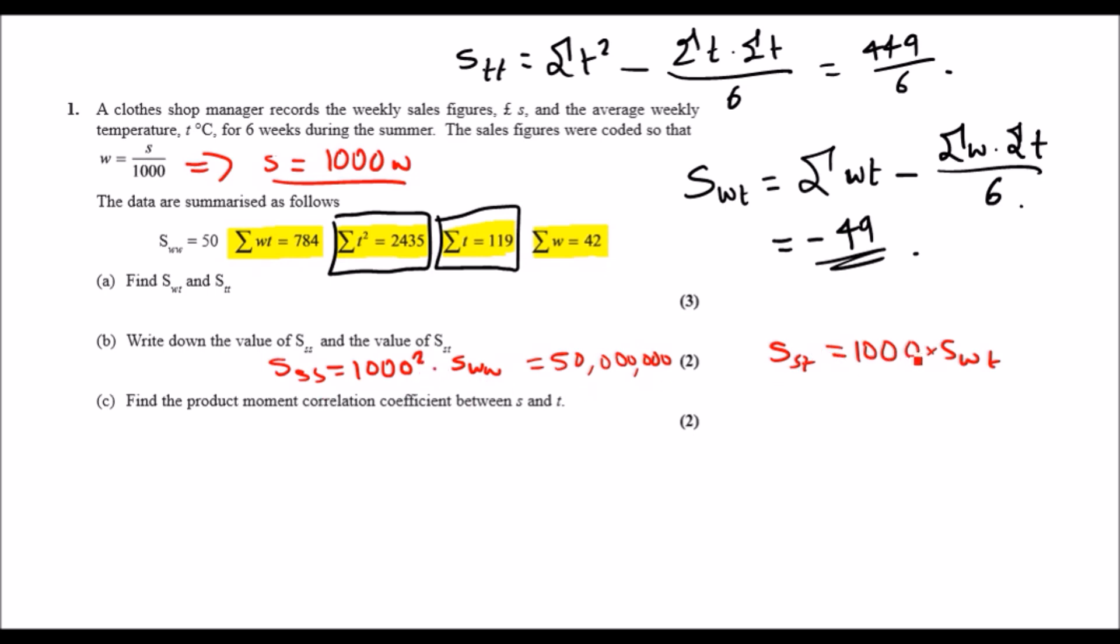So it'll just be ST equals 1000 times SWT. So for a good mental recap, if you're using the same letter twice then it'll be a squared version, but using a single letter with a known value it'll be once, so it'll be power one because there's only one changing variable. And doing this should give you minus 49,000.